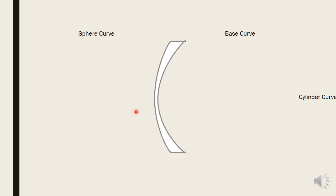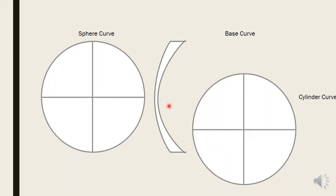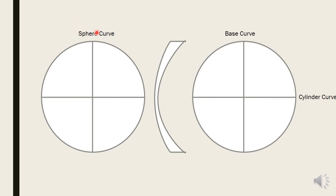The toric formula: the numerator is the sphere curve — the spherical power generated on one surface. The denominator contains the base curve at the opposite axis and the cylinder curve at the same axis as the prescription. Looking at the lens diagram: the front surface has a single sphere curve, and the back surface is divided into two meridians — base curve and cylinder curve — depending on the axis being generated. This lets you identify the sphere, base, and cylinder curve of a given toric lens.